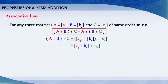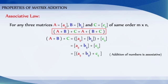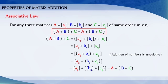Now matrix Aij plus matrix Bij can be written as matrix Dij, so this becomes matrix Dij plus Cij, which equals matrix Aij plus Bij plus Cij. Since addition of numbers is associative, this equals matrix Aij plus matrix Bij plus matrix Cij, which is equal to A plus B plus C. Therefore, the associative law is satisfied for matrix addition.